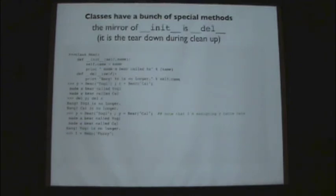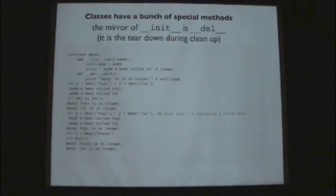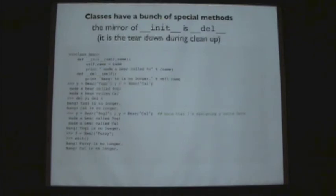If I say Fuzzy Bear and then exit, Fuzzy and Cal both get killed because they were both in my namespace. Even though I quit out of Python, in the process of tearing down Python says 'you've got these objects that have `__del__` methods on them, I better just do that.'